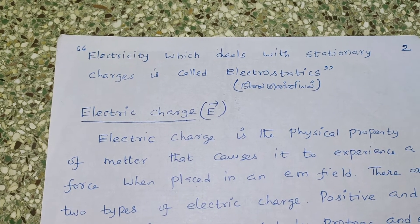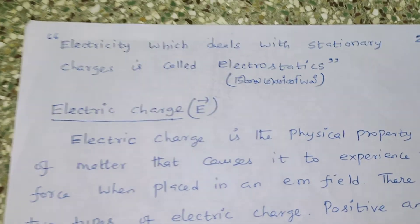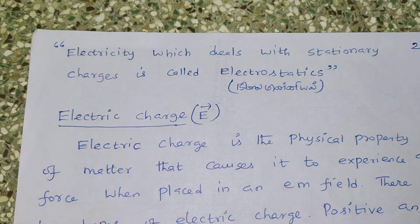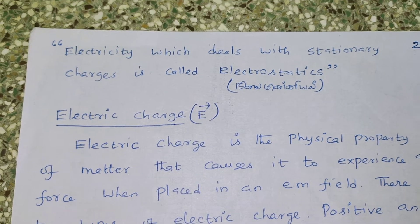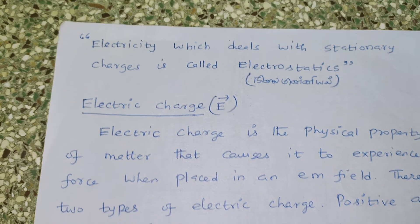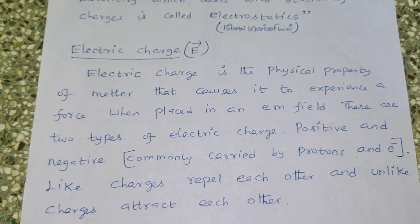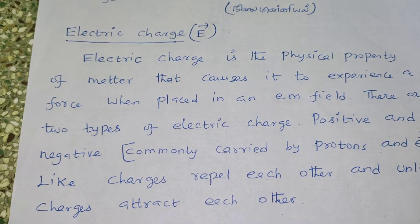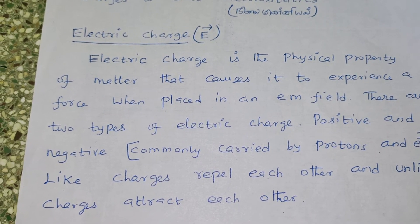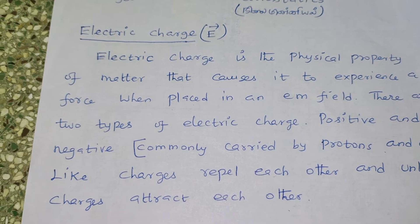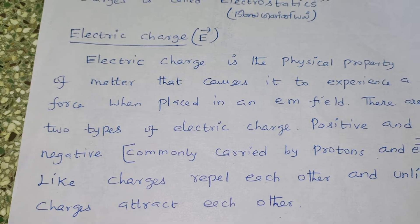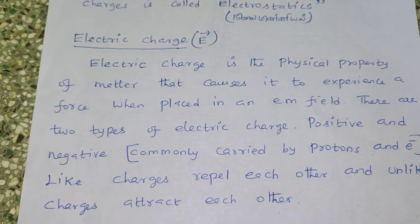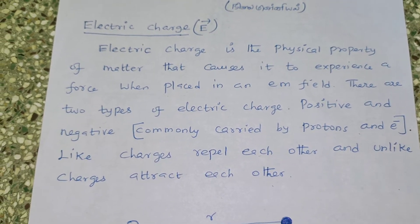The electricity which deals with stationary charges is called electrostatics. Electric charge is the physical property of matter that causes it to experience a force when placed in an electromagnetic field. There are two types of electric charges: positive and negative, commonly carried by protons and electrons. Like charges repel each other and unlike charges attract each other.